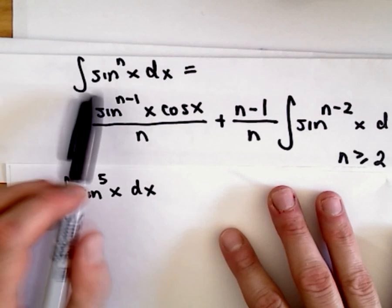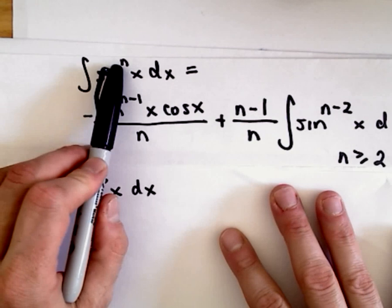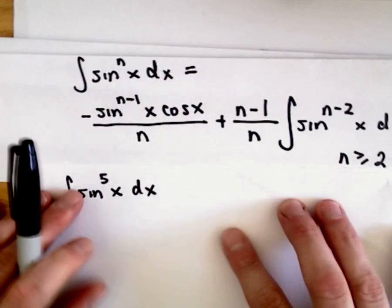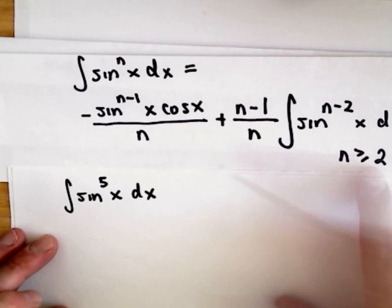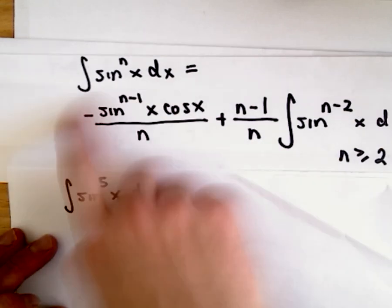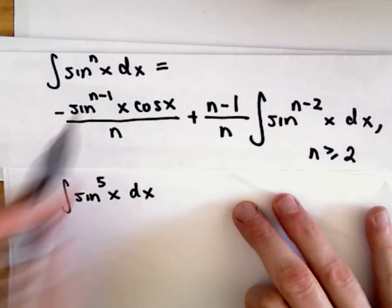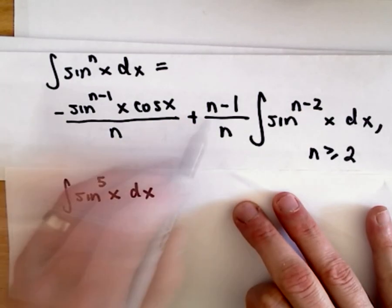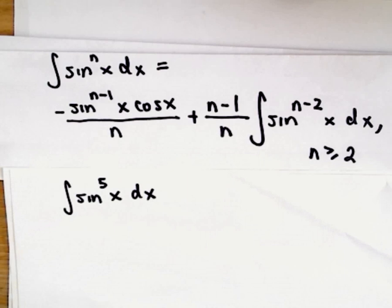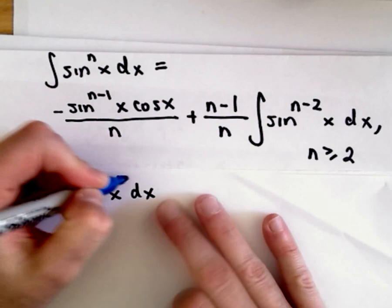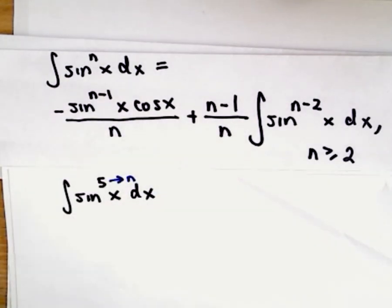So in this case, the formula says if you have sine raised to the power of n of x dx, and again n is greater than or equal to 2, we basically just get this formula. So what we're going to do in this case is I'm just going to replace all of the n's with 5, because this 5 up here is going to be my value of n.